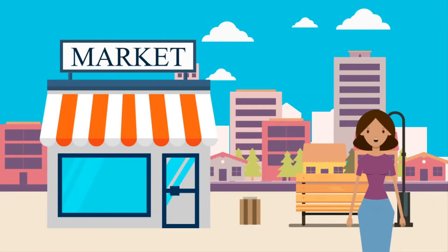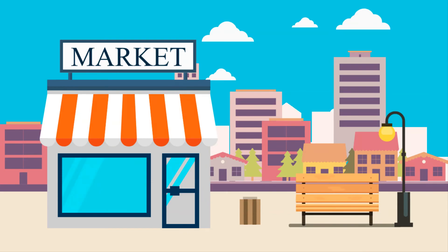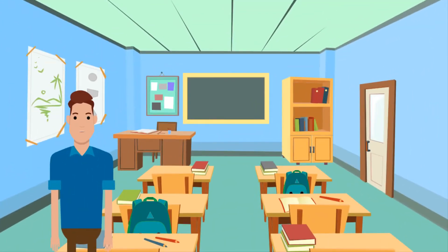What causes inflation? Economists today tend to agree that the main cause of inflation is too much money chasing too few goods. For example, if the money supply increases at a faster rate than the aggregate supply of goods and services, then the general level of prices will rise. The money supply may expand to meet demand and cost pressures.